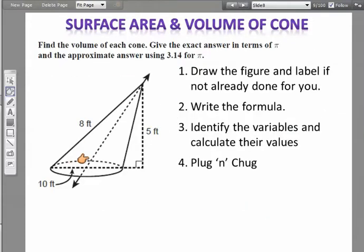Okay, let's move forward. Let's start working on these examples. I'm using this oblique one just to show you that the same formula works for both the oblique and the right pyramid. Again, look at these four steps: draw the figure if not already done for you, write the formula, identify the variables and calculate their values, and then plug and chug.